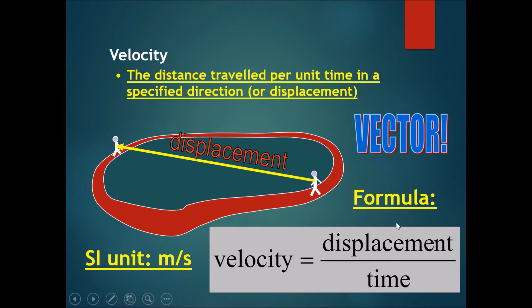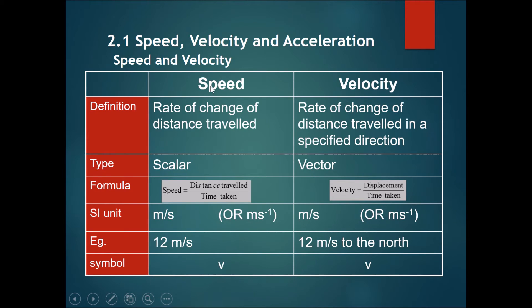Now a simple comparison: speed will be the rate of change of distance traveled; however, velocity will be the rate of change of distance traveled only in a specific direction. Speed will be a scalar, velocity will be a vector. Formula: using slightly different components—speed is distance divided by time, but velocity is displacement divided by time.